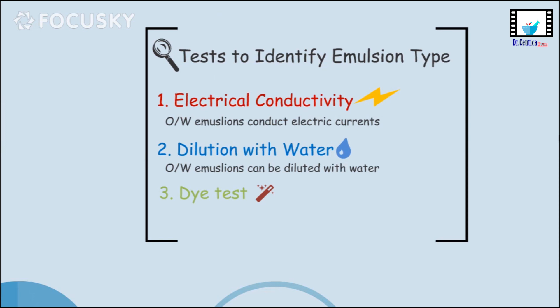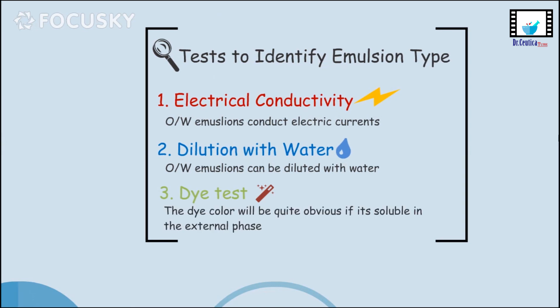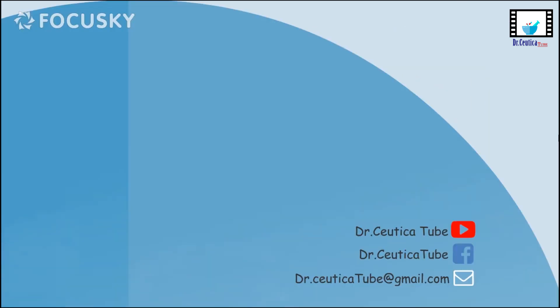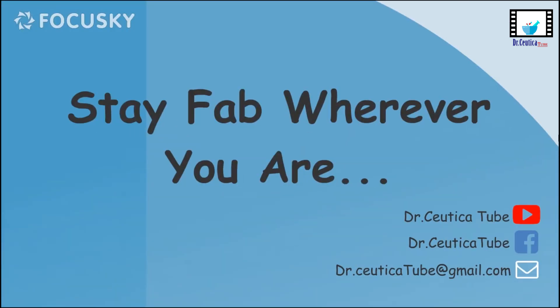You can test this by adding water to milk — being an oil-in-water emulsion, milk can accept more water, unlike margarine, which is a water-in-oil emulsion. The last test is the dye test: water-soluble dyes will color oil-in-water emulgents, while lipid- or fat-soluble dyes will color water-in-oil emulgents. With this we come to an end to today's video. Hope you enjoyed it — till next time, stay fabulous wherever you are.